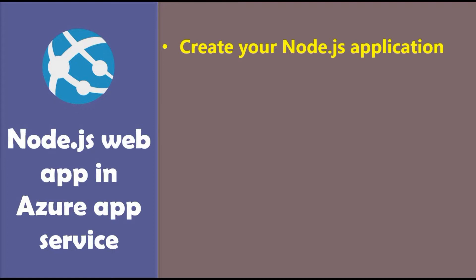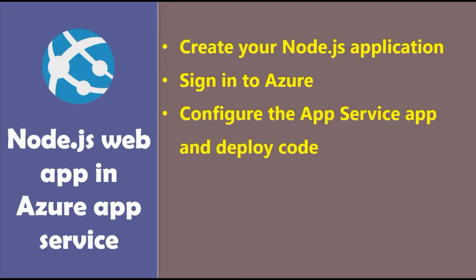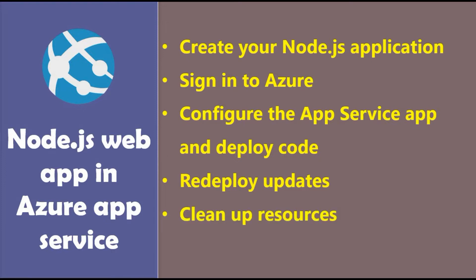The steps we'll cover include: a brief look at a base Node.js application I already have on GitHub, how to sign in to Microsoft Azure from VS Code, how to configure your App Service, deploy the code, redeploy updates when you make changes, and how to clean up resources by deleting them from your Azure app. We'll go through the complete process step by step. You can also use my app from GitHub if you want to deploy to Microsoft Azure.